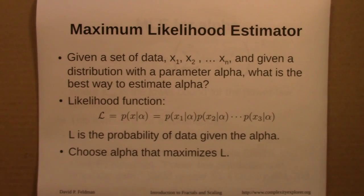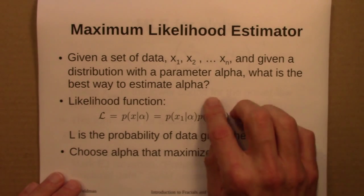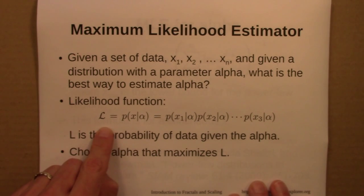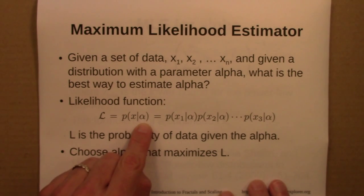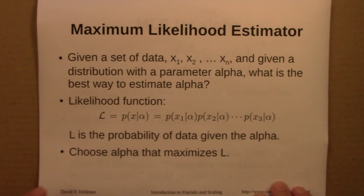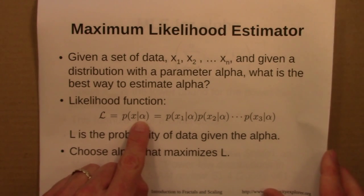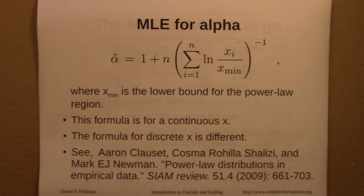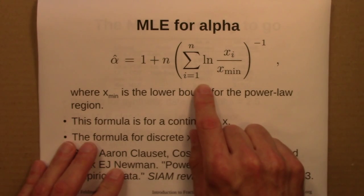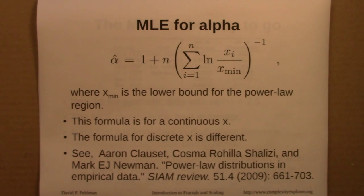Maximum likelihood estimators are a very general idea. Given a set of data and a distribution with a parameter alpha, you form the likelihood function — the probability of the data x given the parameter alpha. For a set of data points, that's the product of individual probabilities. You then choose the alpha that maximizes L, making the observed data the most likely. For a power law, this yields a specific formula, where xmin is the lower bound of the power law region. The formula differs for continuous versus discrete x — an important distinction to remember.